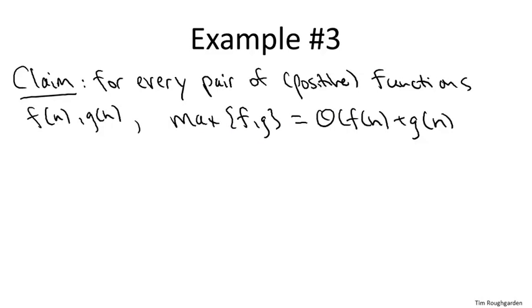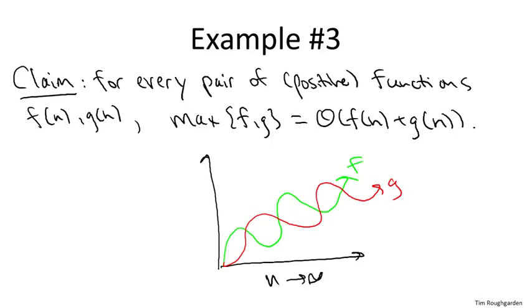So let me make sure it's clear that you know what I mean by the point wise maximum, by max f and g. So if you look at the two functions, both functions of n, maybe we have f being this green function here, and we have g equal to this red function. Then by the point wise maximum, max fg, I just mean the upper envelope of these two functions. So that's going to be this blue function.